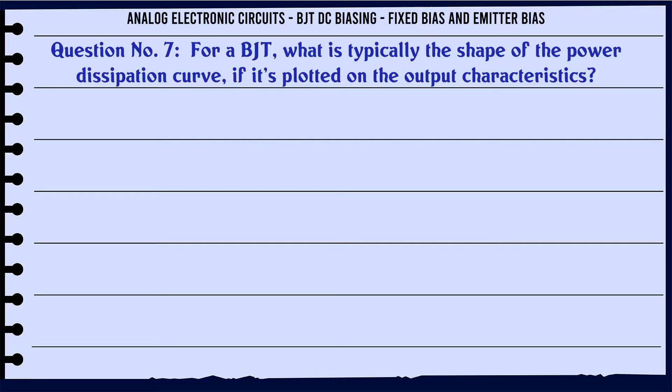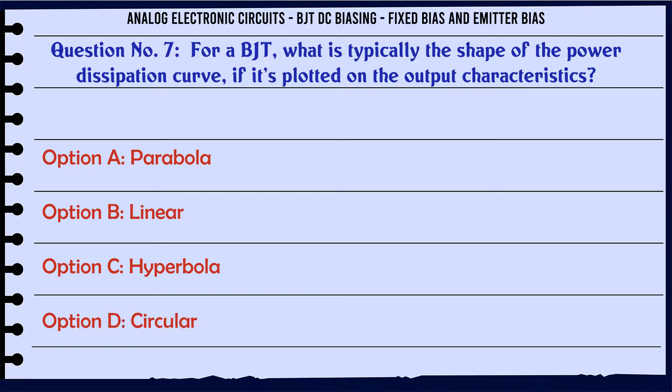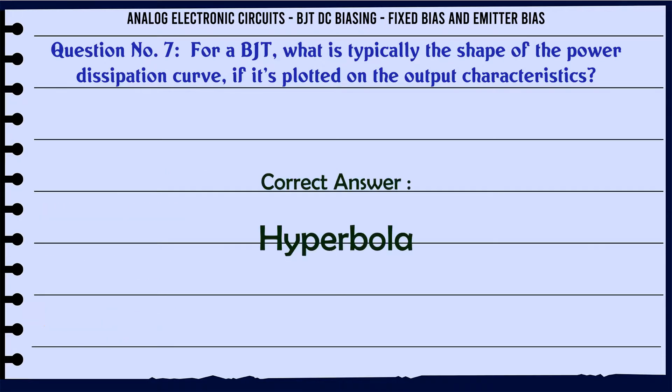For a BJT, what is typically the shape of the power dissipation curve if it's plotted on the output characteristics? A: parabola. B: linear. C: hyperbola. D: circular. The correct answer is hyperbola.